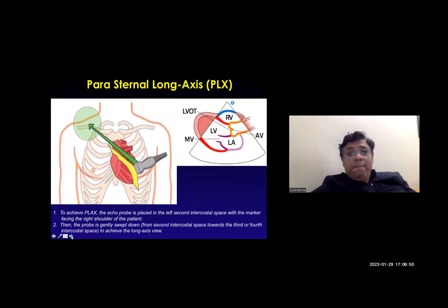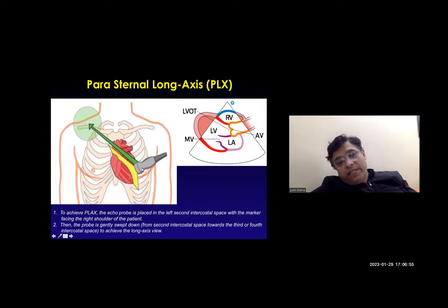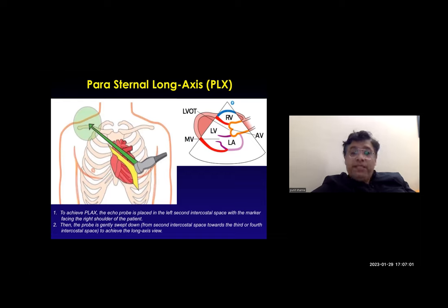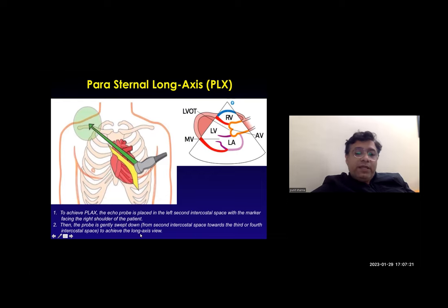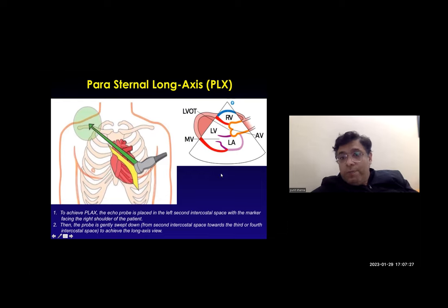For the parasternal long axis view, the echo probe is placed in the left second or third intercostal space with the marker facing towards the right side of the shoulder. The probe is then swept down from the second towards the third or fourth intercostal space to achieve the long axis view. Structures visible in the long axis view include the right ventricle, left ventricle outflow tract, and posterior wall.